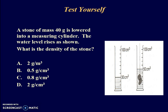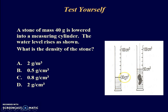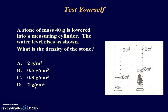Try this question: a stone of mass 40 g is lowered into a measuring cylinder and the water rises. What is the density of the stone? The mass of the stone is 40 g. The volume of the stone will be the difference in the water level: 50 minus 30, so that will be 20 cm cubed. So 40 g divided by 20 cm cubed gives an answer of 2 g per cm cubed. Please take note of the units. Answer D.